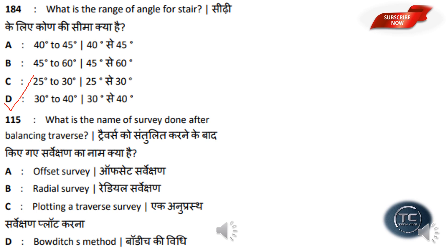What is the name of the survey done after balancing a traverse? The options are: Offset Survey, Radial Survey, Plotting a Traverse Survey, Boundage Methods. The answer is Option C — Plotting a Traverse Survey.